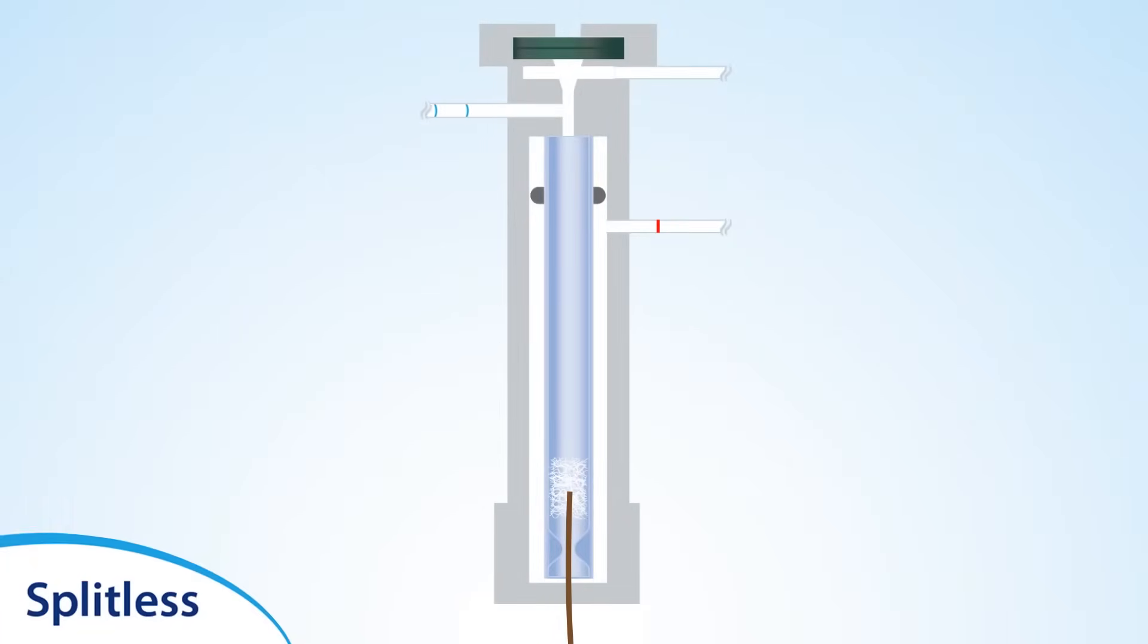As there is no split flow, the total flow is set at a dramatically reduced flow rate. Here, it's only 4 mL per minute. 3 mL per minute passed through the septum purge while the remaining 1 mL per minute entered the column.